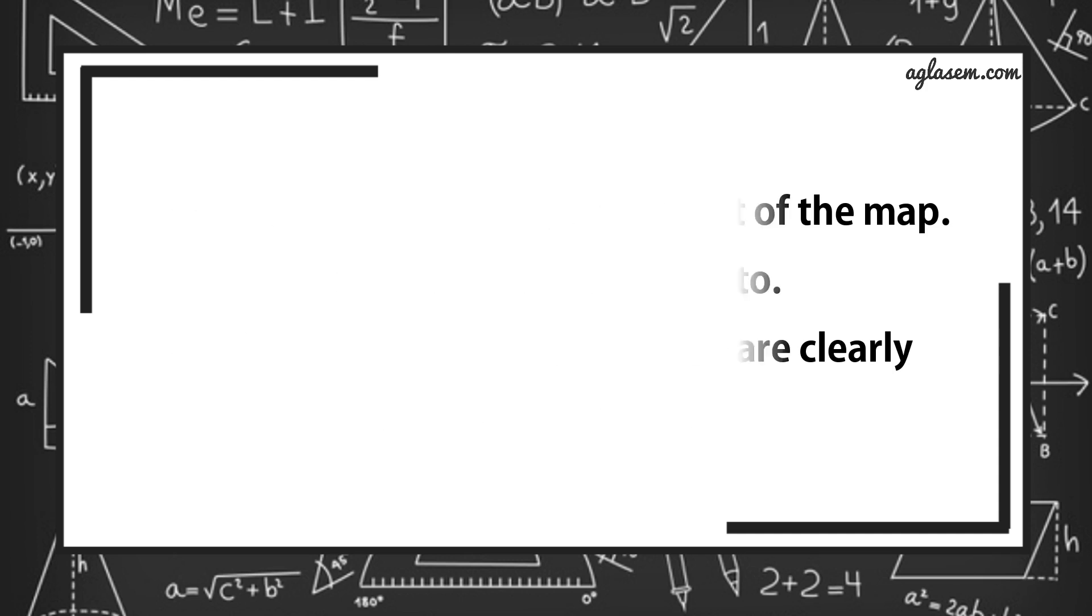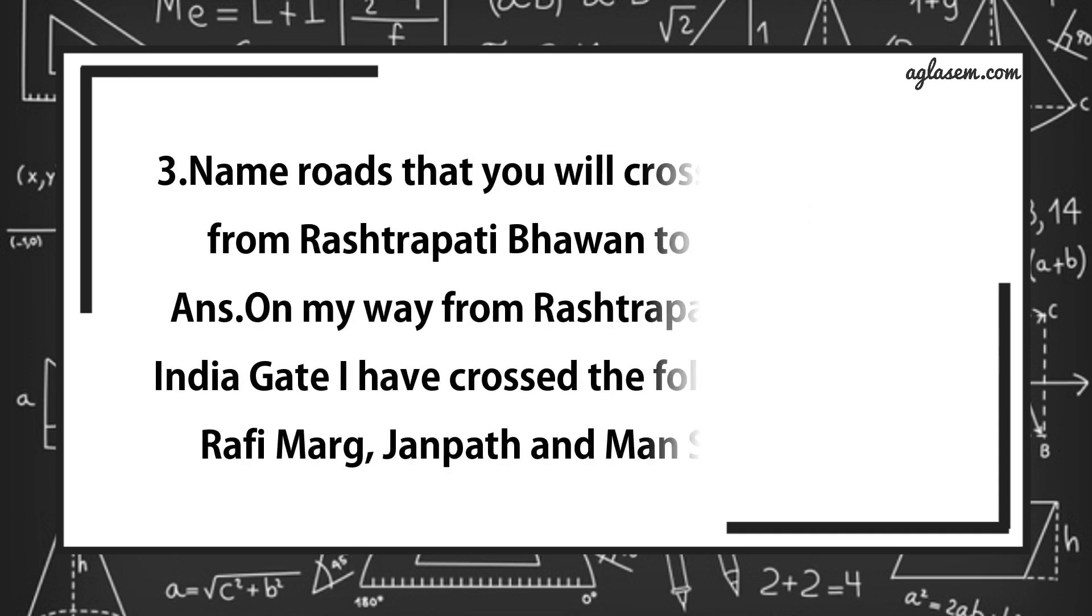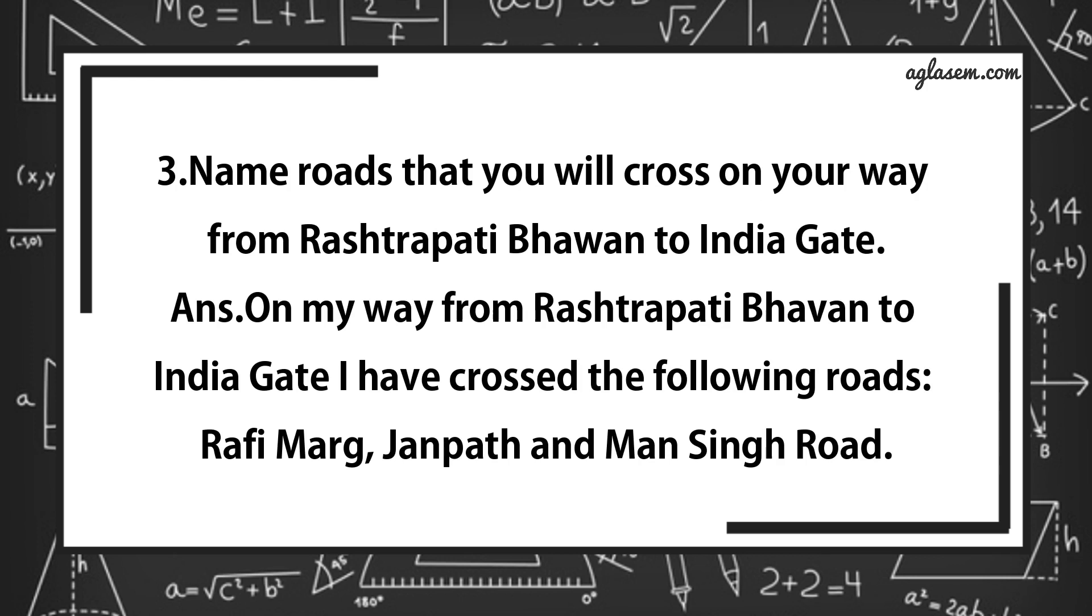For question number 3 says, name roads that you will cross on your way from Rashtrapati Bhavan to India Gate. Answer is, on my way from Rashtrapati Bhavan to India Gate, I have crossed the following roads: Rafi Marg, Janpath, and Man Singh Road.